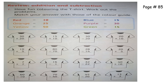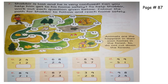This page is your homework. You have to solve these sums and write the answers. Then color the t-shirts: if the answer is 10 use red, if 25 use orange, if 50 use yellow, if 15 use blue, if 30 use purple, and if 14 use green color in the t-shirt.